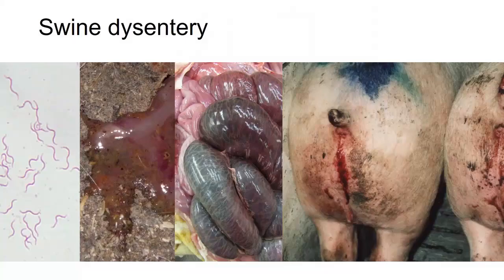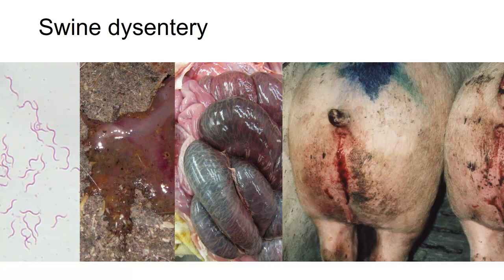This is probably, as we would say in Brazil, raining on the wet — something everybody already knows, but we'll quickly go through this slide to remind everyone what swine dysentery is. Swine dysentery: first clinical description in 1921, simultaneously in Indiana and the UK. We did not know what caused this until 1971, when something called Serpulina hyodysenteriae, now known as Brachyspira hyodysenteriae, was associated with this disease. Swine dysentery is classically described as mucohemorrhagic diarrhea and colitis.